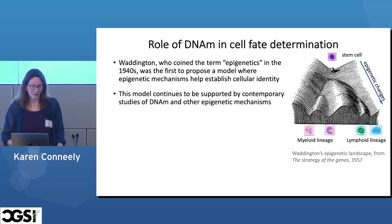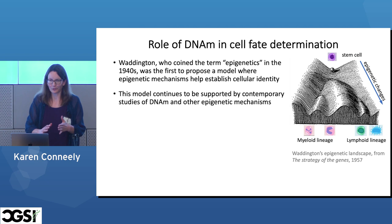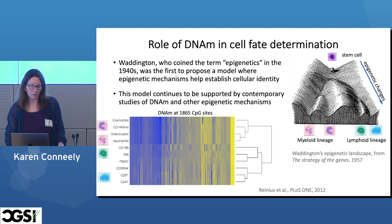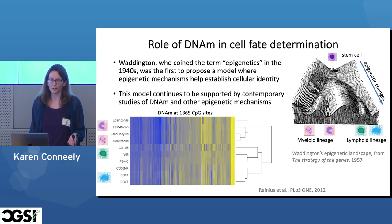Impressively, this model proposed in the 40s and 50s continues to be supported to this day by modern studies. Here's an example from 2012 using bulk array-based data — no fancy single-cell data. In this project they sorted whole blood into different components and looked at methylation profiles within each component. You can see each component has its own methylation profile. When they did hierarchical clustering, the tree produced really resembles the actual lineage of these blood cells — lymphoid cells are down here, myeloid cells are up here. It tracks lineage pretty well, and this is using technology from ten years ago.